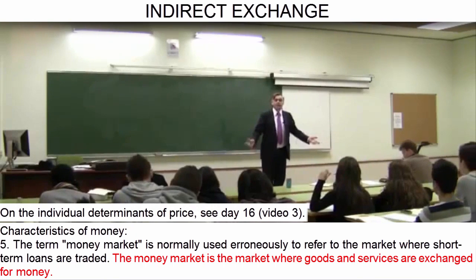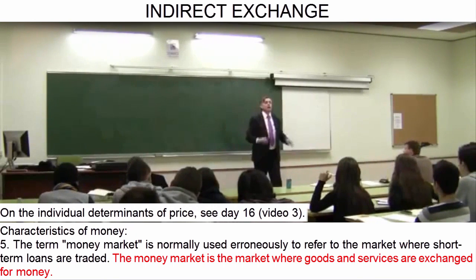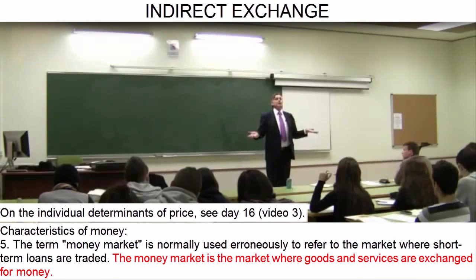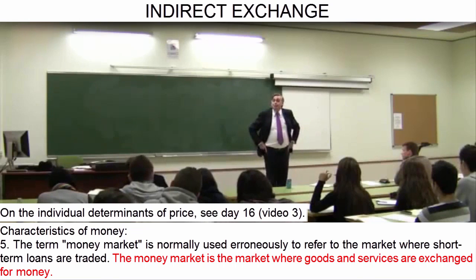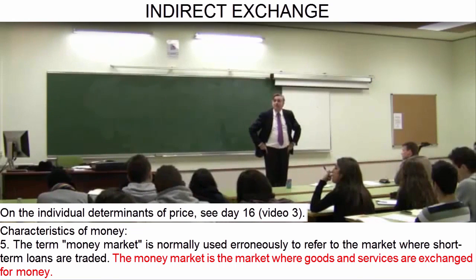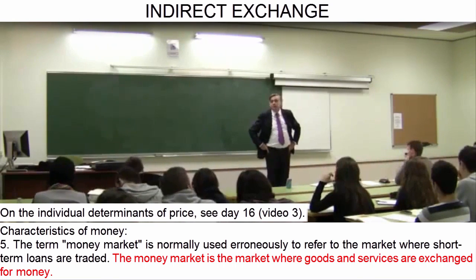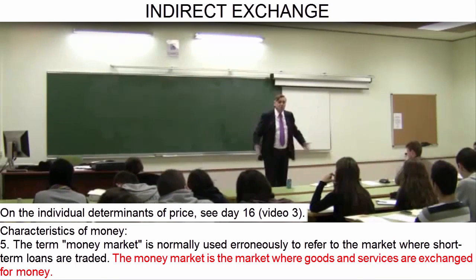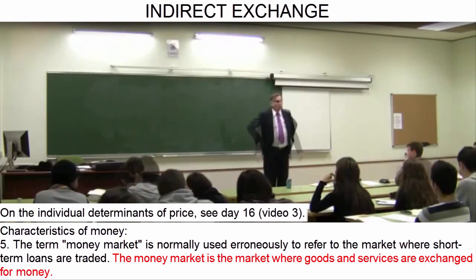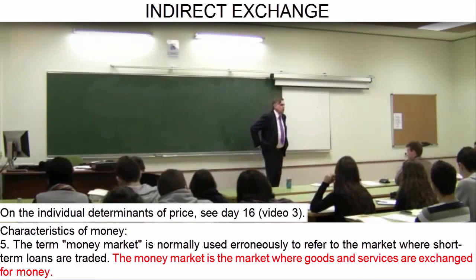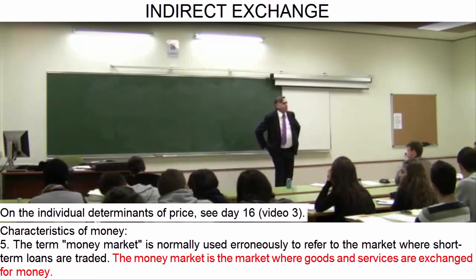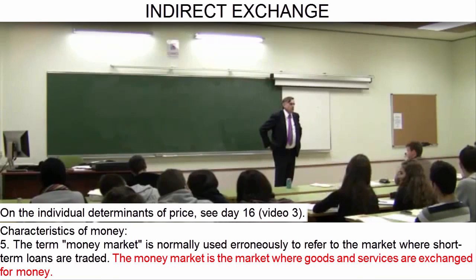Remember the individual determinants of price. Other things being equal, if the supply of potatoes rises, what happens to the price of potatoes? It tends to fall. Other things being equal, if the supply of money rises, what happens to the price of money? Its purchasing power tends to fall. If the purchasing power of money falls, that means the price of goods and services, in terms of monetary units, rises.